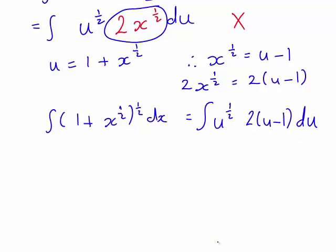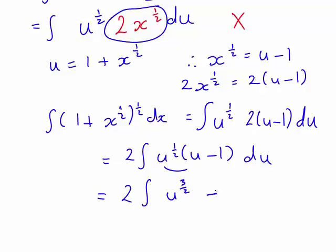From here that still looks a little complicated, but we can actually just take the 2 outside the integral sign, since that's a constant, which gives us 2 times the integral of u to the half times (u minus 1) du. And this will become manageable if we expand the brackets. So using index laws, u to the half times u, that will be u to the 3 on 2, minus just u to the half times 1, that will just be u to the half. So we now have an expression that's relatively straightforward to integrate.